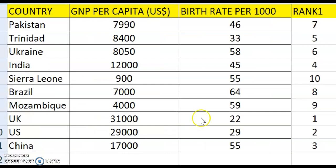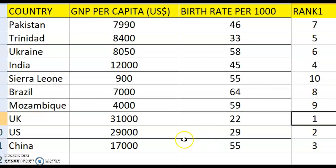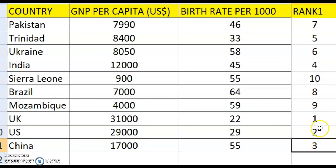For GNP per capita, I ranked from highest to lowest, so the highest value gets rank 1. The value 1000 corresponded to rank 1, 29,000 was rank 2, 17,000 was rank 3, and so on down the list, as you can see on screen.